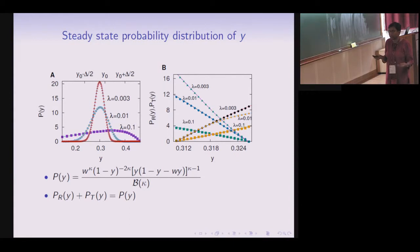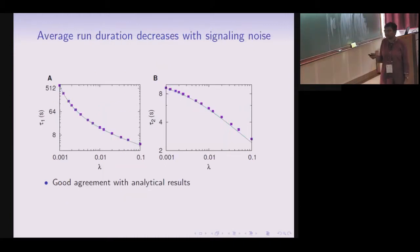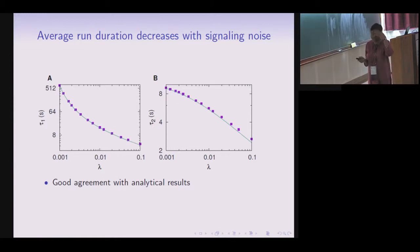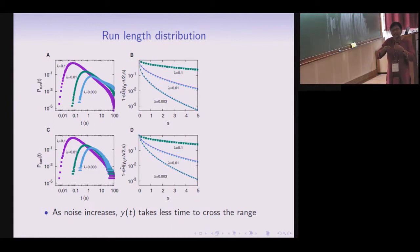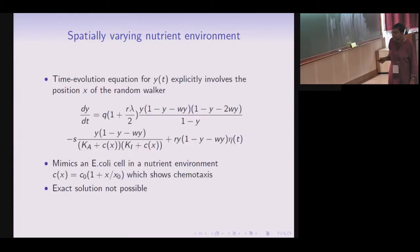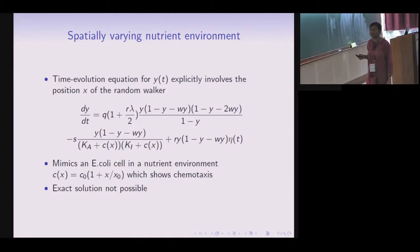We can solve for P(y), the probability distribution of the signal variable, and calculate mean run length and mean tumble length as mean first-passage times in the homogeneous environment. Analytical results show good agreement with numerics. We can also calculate the Laplace transforms of the run-length and tumble-length distributions, which also agree well with numerics. As noise increases, the signal crosses the range faster, so the distributions shift towards shorter times.